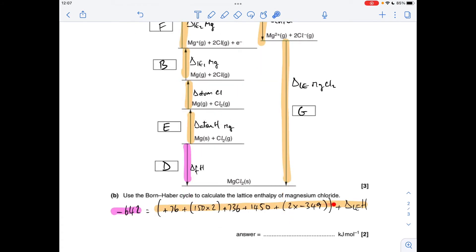So there's all the numbers in there, just a quick reminder that we had to double that one. That's the atomisation of chlorine and that's the electron affinity of chlorine. So again, that one needed doubling.